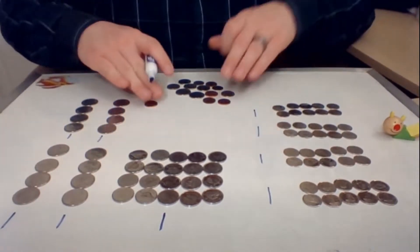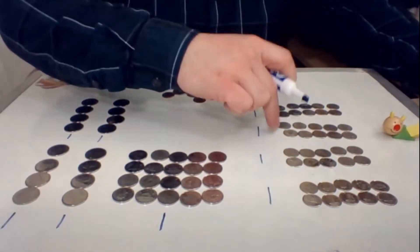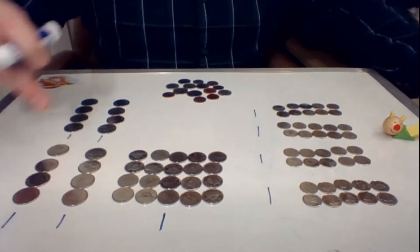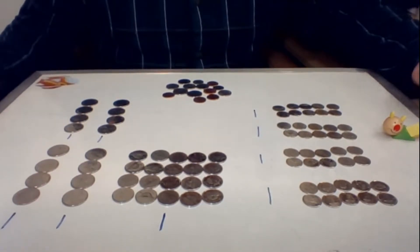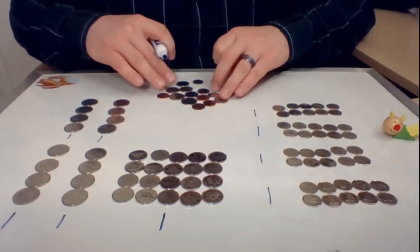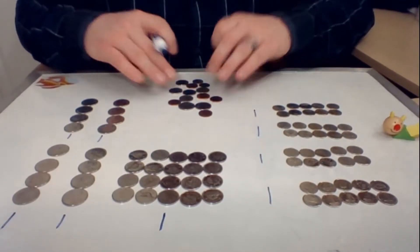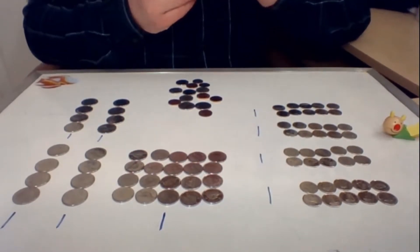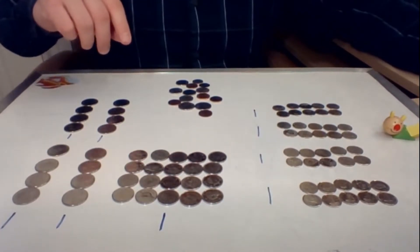So how many dollars do we have so far? 1, 2, 3, 4, 5, 6, 7, 8, 9 dollars. Carl, are you getting excited? We only need one more dollar. Now we've got this mix mash of coins up here. I wonder if they add up to a dollar, because if they do, Carl, we're in business.